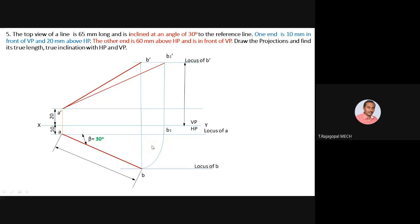Remember this key concept: if either front view or top view with its inclination is known, you can find the true length in the other view. If the top view is known, rotate it parallel to XY to get the true length in the front view. If the front view is known, rotate it parallel to XY to get the true length in the top view.